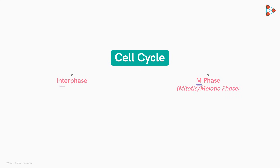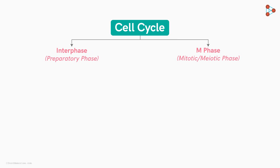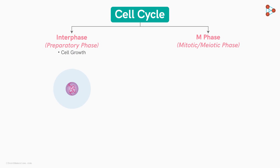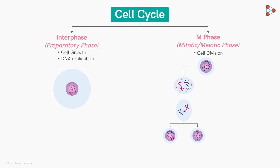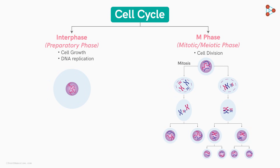The interphase prepares the cell for division, hence it is also called the preparatory phase. In this phase, the cell grows and makes a copy of its genetic material — the DNA. The M phase, on the other hand, is the dividing phase. After a series of steps, the cell first divides the nucleus into two sets, followed by division of the cytoplasm, giving rise to two identical daughter cells — a process called mitosis. Alternatively, a parent cell can divide twice to give four daughter cells, each with half the genetic material of the parent — this is called meiosis, useful in the production of gametes.